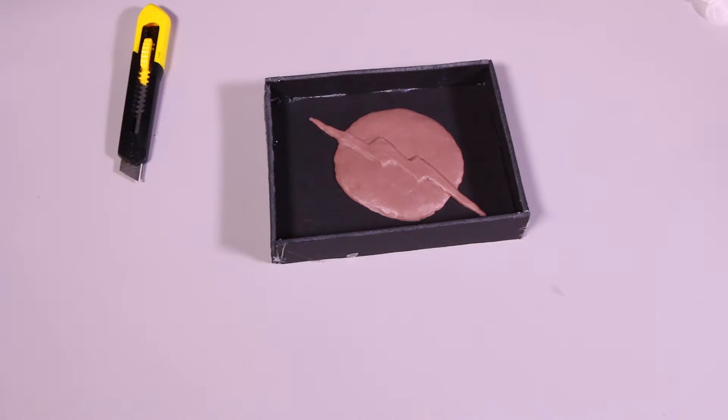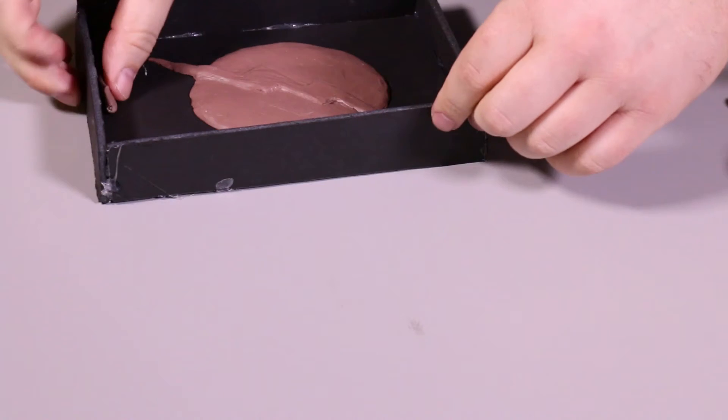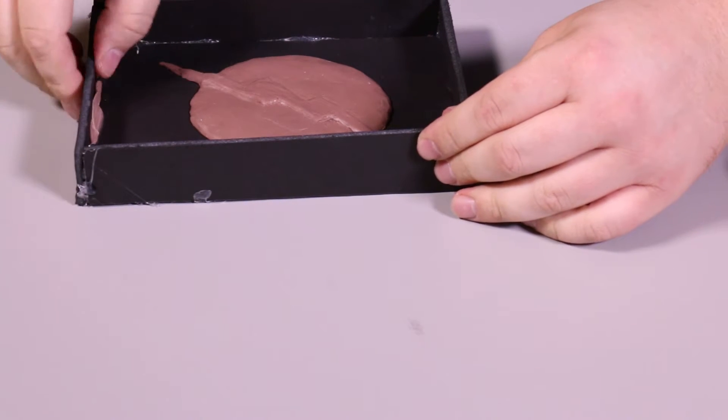The box should look like this when you're done. Then you're going to take your clay and put it into the spots where the silicone could leak out.